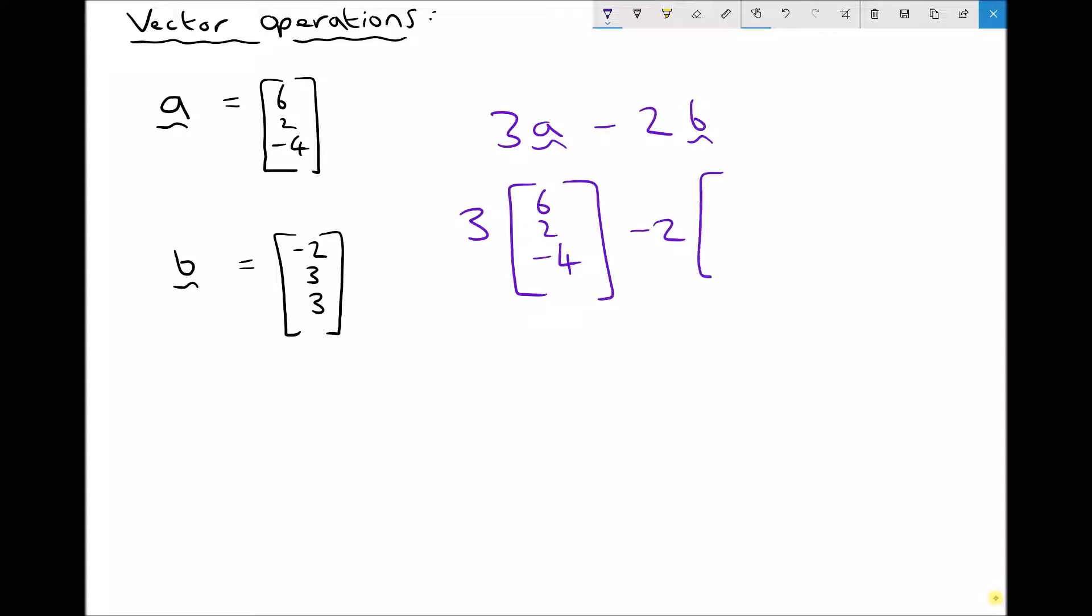Minus 2, 3, 3. And what we need to do in this instance is we need to multiply our x, y and z coordinates by the scalar. And here what I'm referring to as the scalar is the number on the outside.